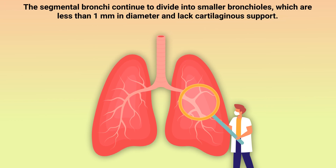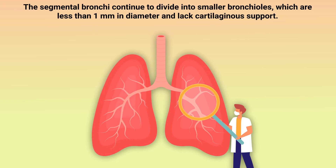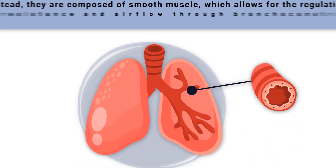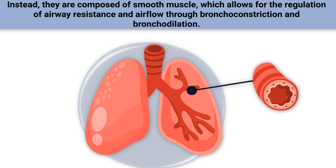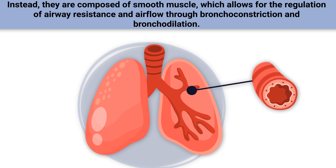The segmental bronchi continue to divide into smaller bronchioles, which are less than 1 mm in diameter and lack cartilaginous support. Instead, they are composed of smooth muscle, which allows for the regulation of airway resistance and airflow through bronchoconstriction and bronchodilation.